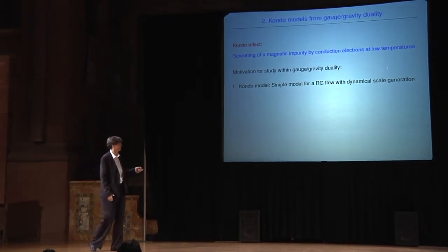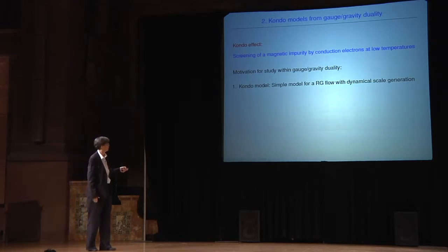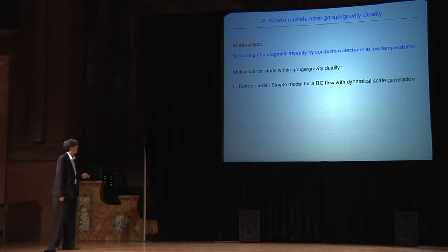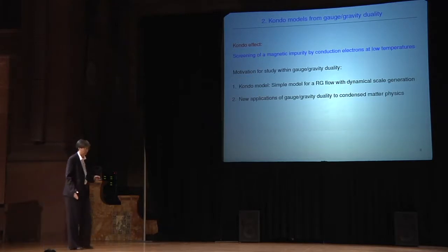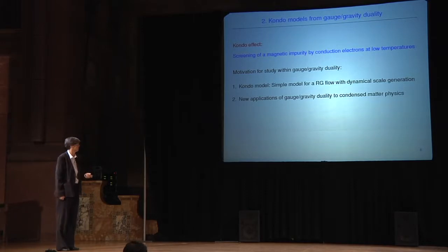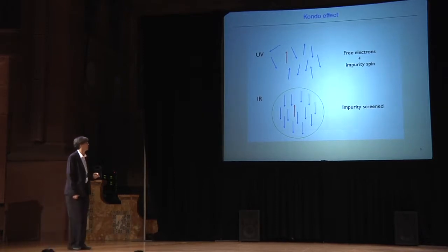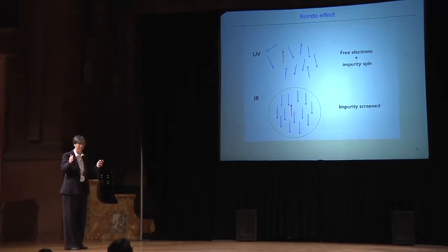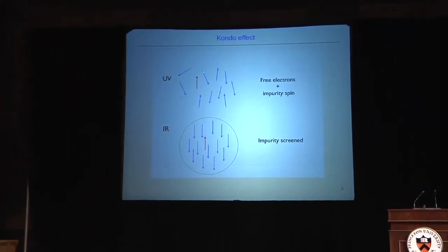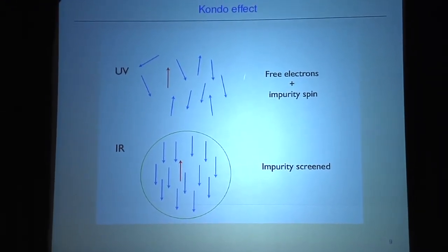We can learn more about holographic RG flows from this very simple system. Secondly, this is a ubiquitous model in condensed matter physics so we can expect new applications of gauge-gravity duality. Let me briefly show you the physical picture of the Kondo effect. There is definitely an RG flow from the UV to an IR fixed point. At the UV you have this impurity spin, and the conduction electrons don't interact with the impurity.